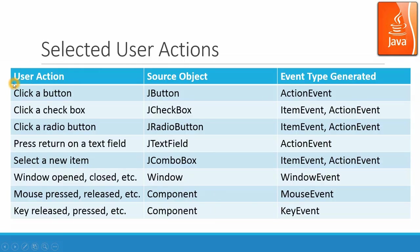Selected user actions include: click button, click checkbox, click radio button, press return on a text field, select a new item, window open or close, mouse press or release, and key release or press. Here are the source objects for each of the actions, and the type of event being generated. In the listener class, we have the actionPerformed method with a parameter action event object E, which handles the action event objects. You can have different handlers to handle different event types.